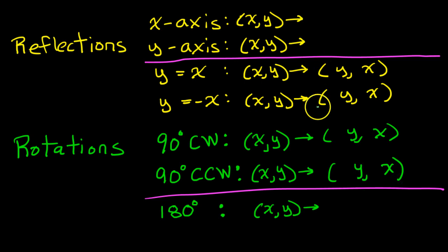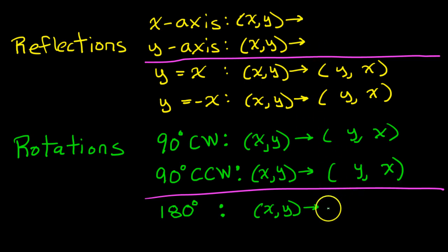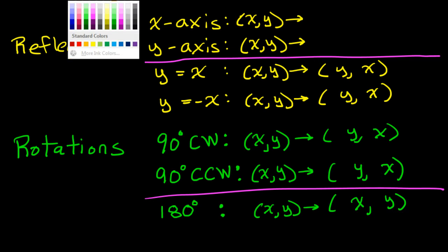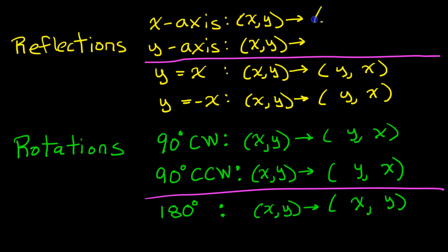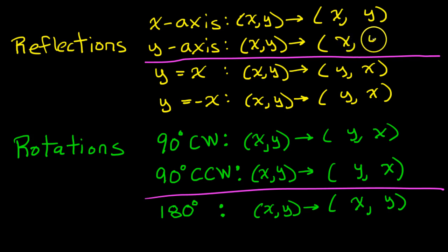Practice writing this list over and over again. Everything outside of the lines — these other three — will be your x, y. The order doesn't change for those.